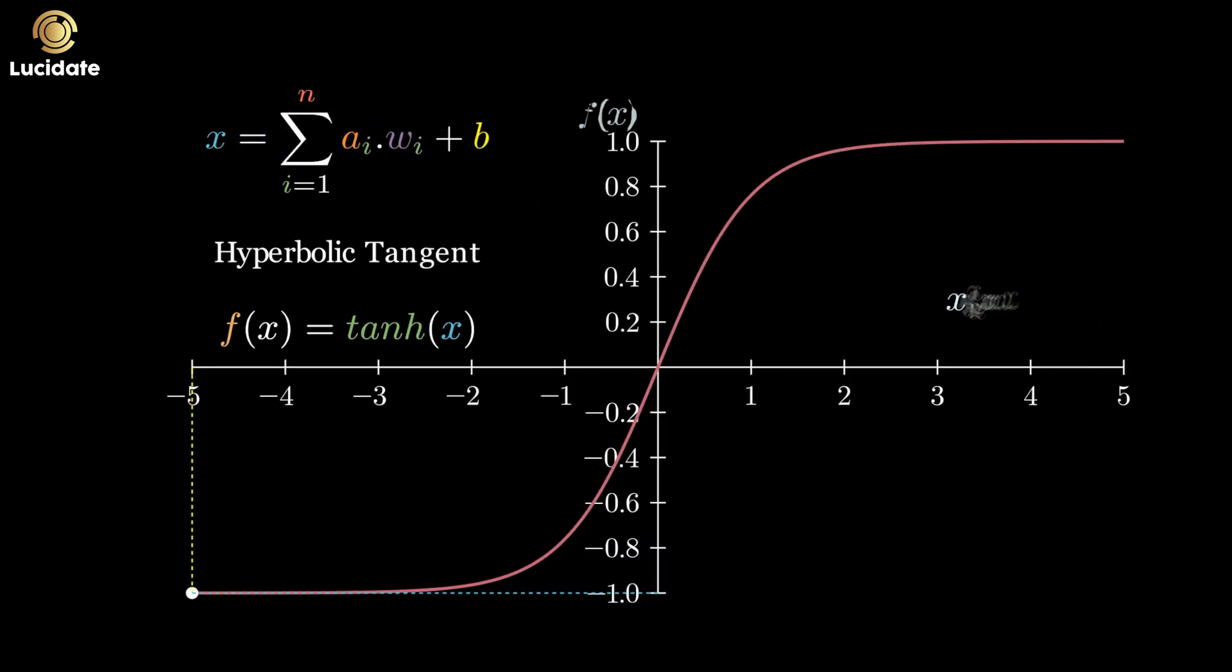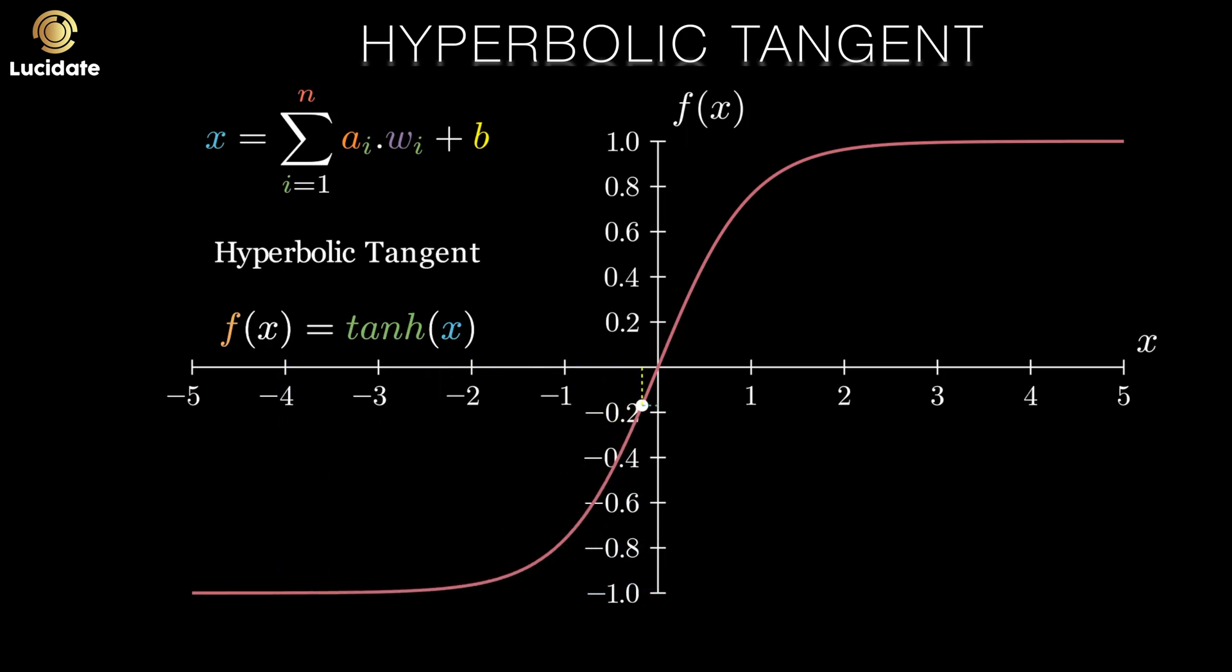An improvement on sigmoid from a squishing perspective is the hyperbolic tangent. This had its heyday through the late 1990s and early 2000s as a common choice of function. Inputs here are compressed down to the minus one to plus one range. So the vanishing gradients problem is still there, but it's only half as bad. This function also has a well-behaved derivative that is relatively easy to compute.